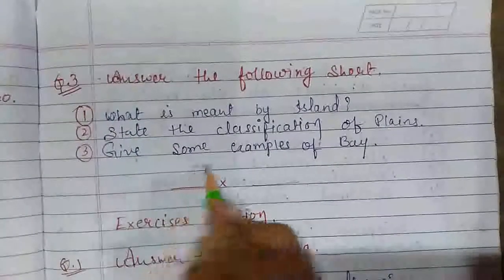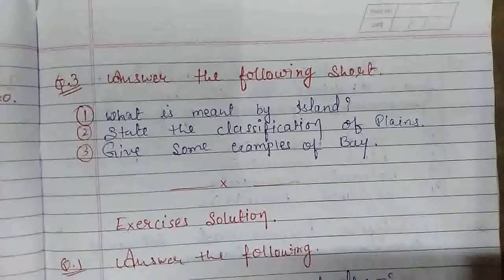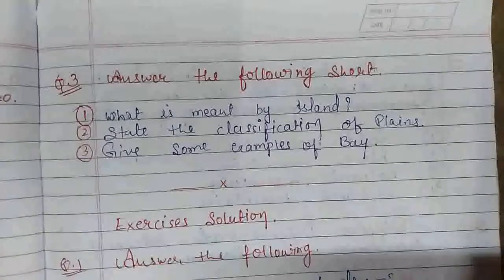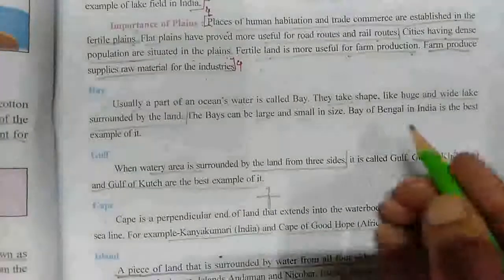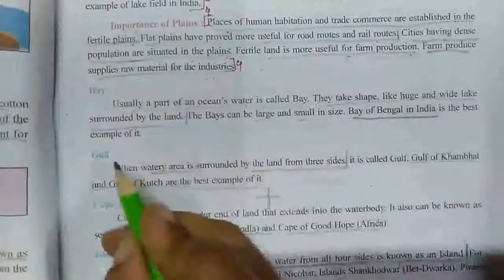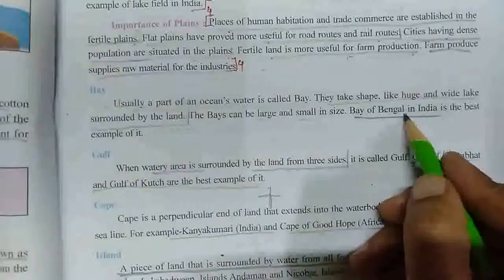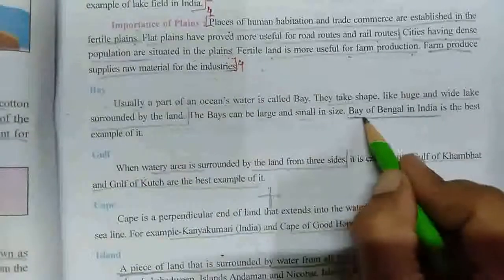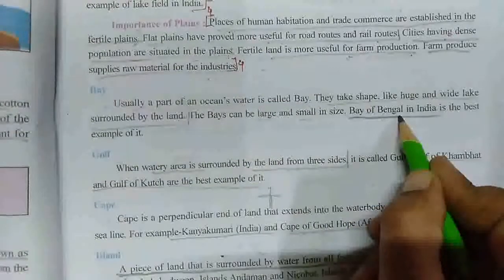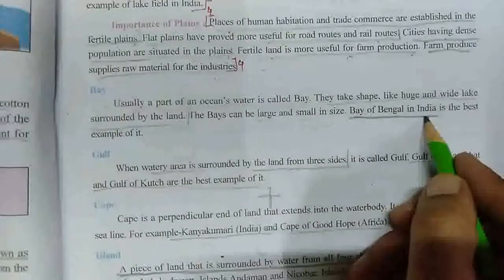Give some examples of bay. Bay jo hai, uske hum logoko examples likhne hain. Bay large or small size mein ho sakti hai. Bay of Bengal in India is the example of bay. Usmeh Bay of Bengal jo hai, woh India ka example hai.